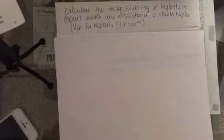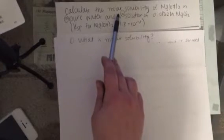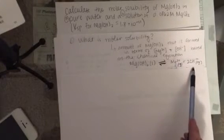We're given a Ksp, which is your equilibrium constant for solubility for magnesium hydroxide. The first question is: what is molar solubility? We need to know what this means in order to answer this question. This really just refers to the concentration of Mg²⁺ and OH⁻ that's formed from dissolving magnesium hydroxide, so we just want to know those two concentrations.